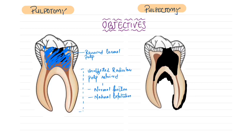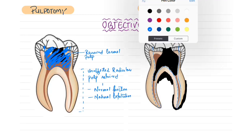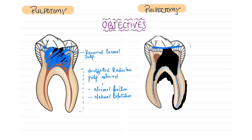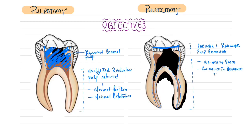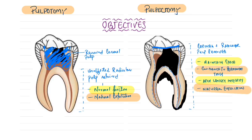For pulpectomy, when there is infected coronal as well as radicular pulp tissue — inflamed, infected, or necrotic — we remove the entire pulp tissue. After pulpectomy, the normal function of the tooth is restored, we maintain the space for the permanent dentition by preserving the tooth, the tooth serves as guidance for the permanent tooth, we maintain arch length integrity, and we promote natural exfoliation.